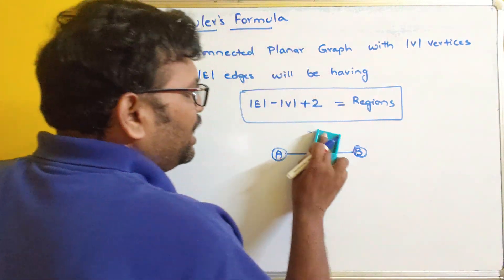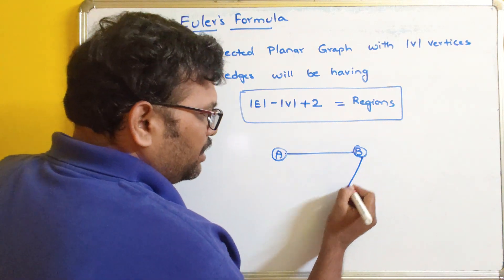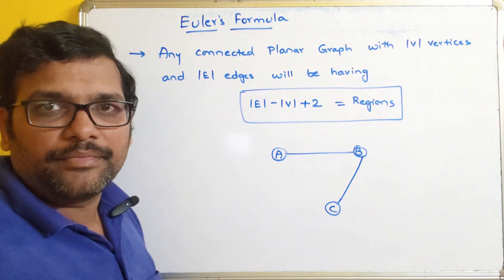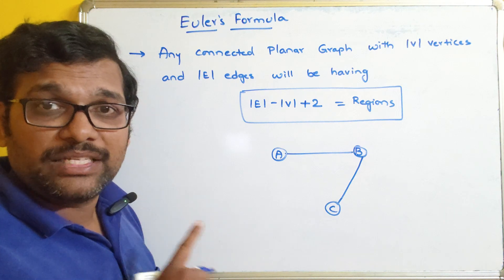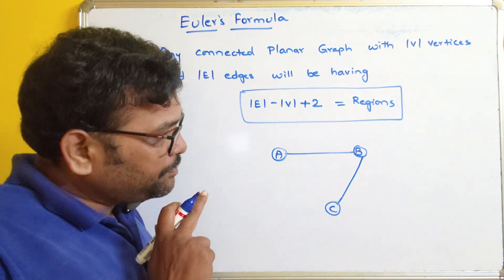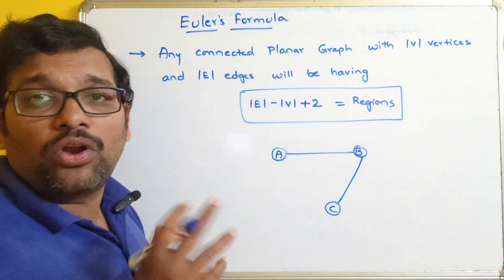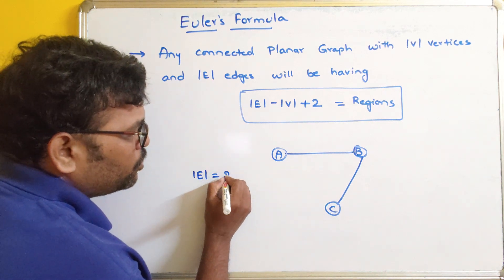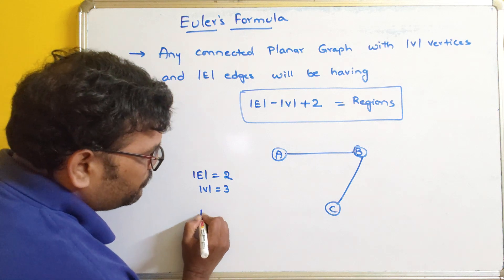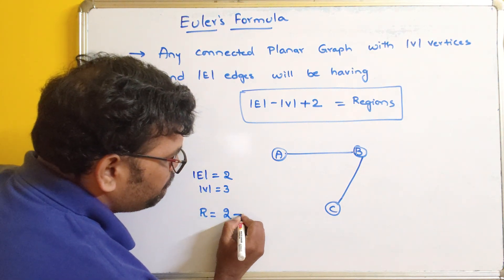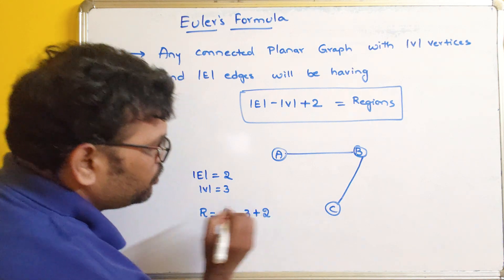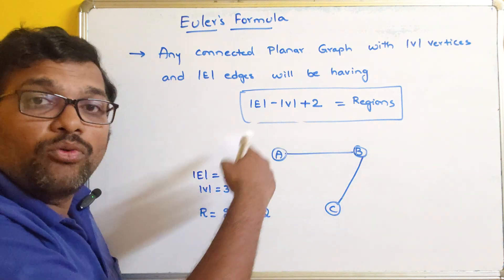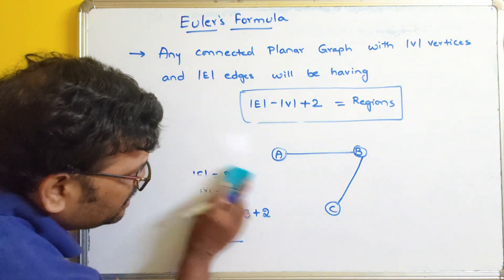Let us extend this. Now we have two edges and three vertices. This is connected — no vertex is without any connection — and planar, since the two edges do not intersect. By Euler's formula: edges 2 minus vertices 3 plus 2 equals 1 region. So only one region — the outer region.